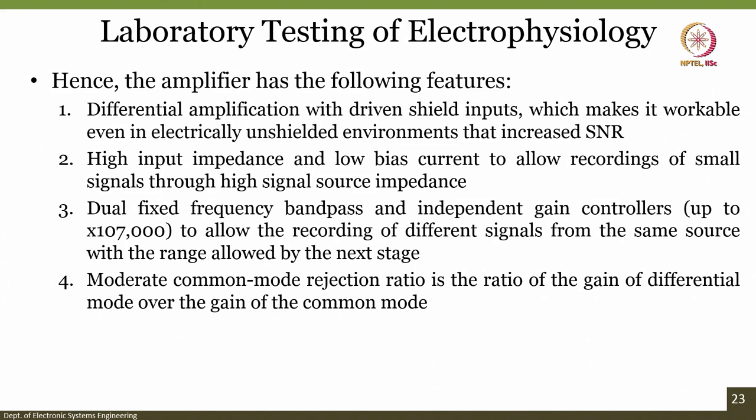The amplifier circuit used to amplify the signal should have the following features. First, differential amplification with driven shield inputs, which makes it workable even in electrically unshielded environments and increases the SNR. Second, high input impedance and low bias current to allow recordings of small signals. Third, dual fixed-frequency bandpass and independent gain controllers to allow recording of different signals from the same source. Fourth, moderate CMRR — common mode rejection ratio — which is the ratio of the differential gain to the common mode gain.